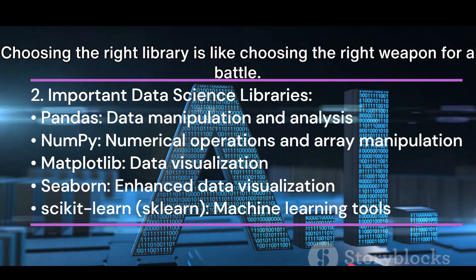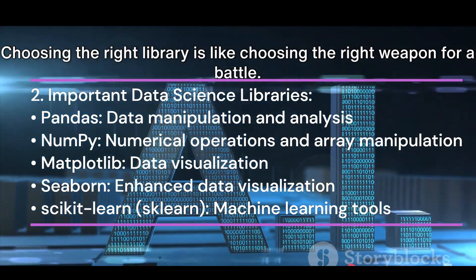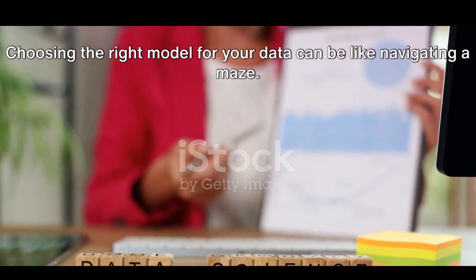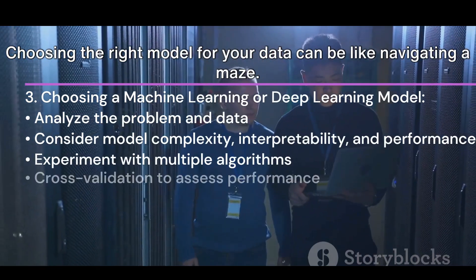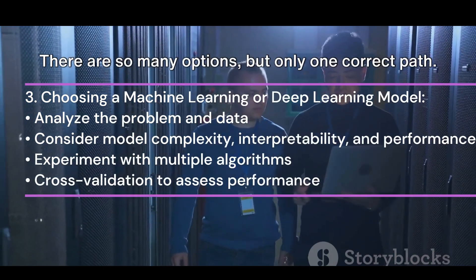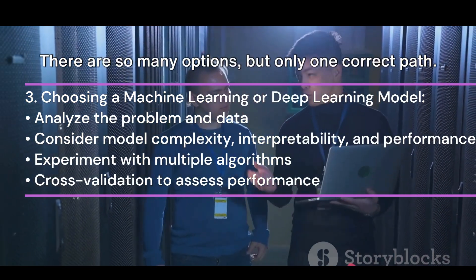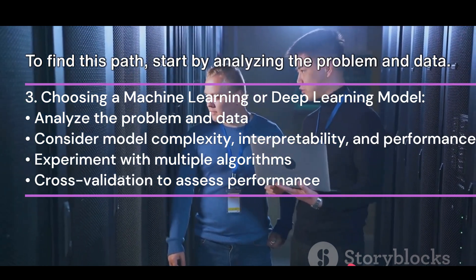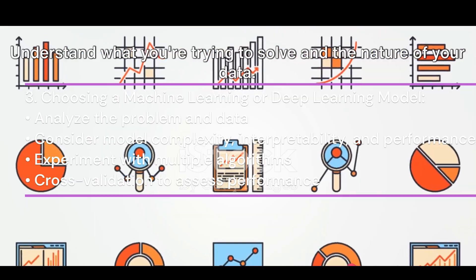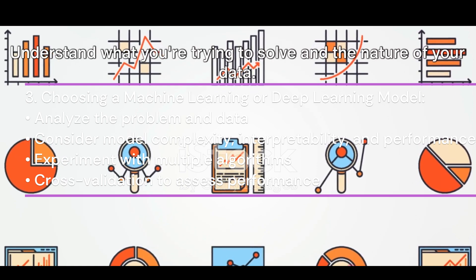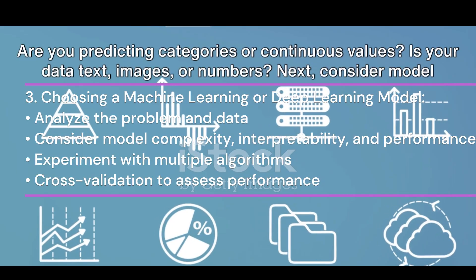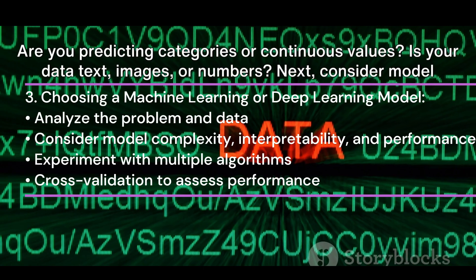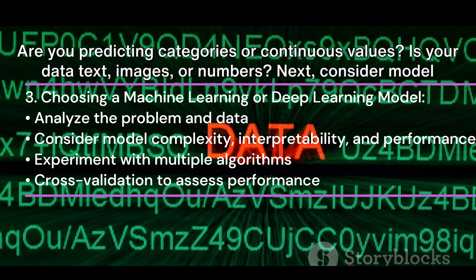Choosing the right model for your data can be like navigating a maze — there are so many options, but only one correct path. To find this path, start by analyzing the problem and data. Understand what you're trying to solve and the nature of your data. Are you predicting categories or continuous values? Is your data text, images, or numbers?